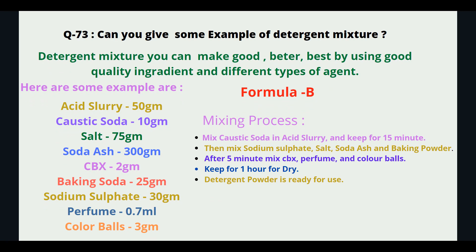Detergent mixtures can be made good, better, or best by using good quality ingredients and different types of agents. Formula B: acid slurry 50g, caustic soda 10g, salt 75g, soda ash 300g, CMC 2g, baking soda 25g, sodium sulfate 30g, perfume 0.7ml, color ball 3g. Mixing process: mix caustic soda in acid slurry and keep for 15 minutes, then mix sodium sulfate, salt, soda ash, and baking powder. After 5 minutes, mix CMC, perfume, and color ball. Keep for one hour to dry. Detergent powder is ready for use.